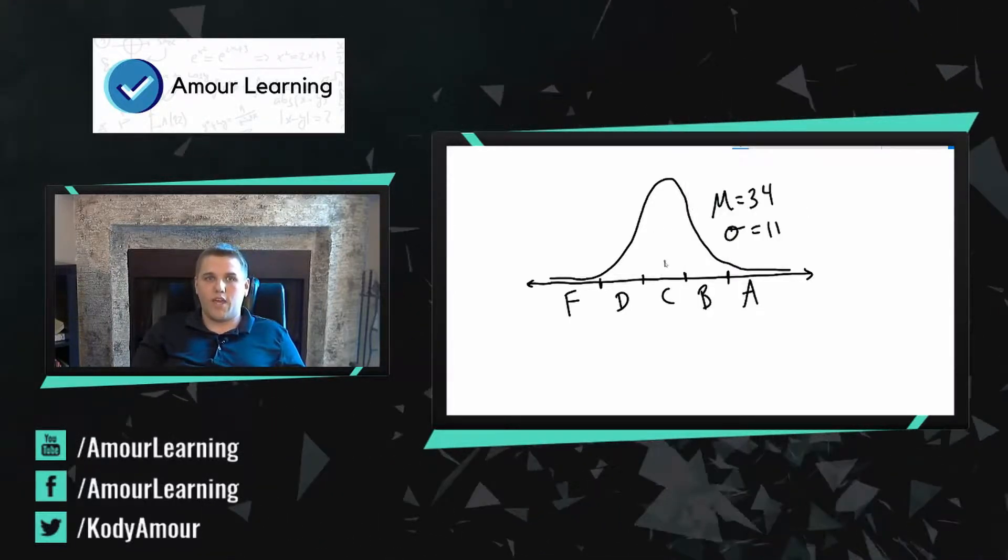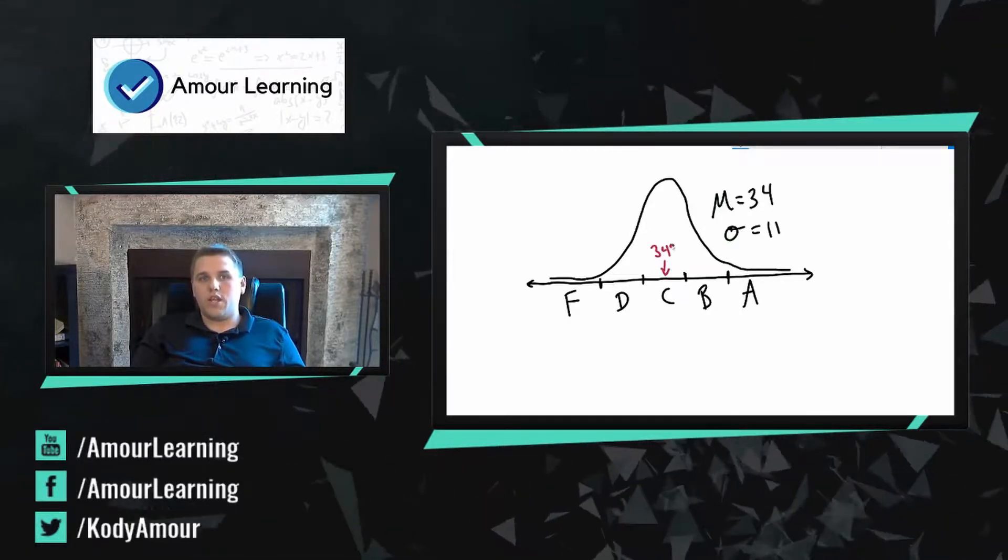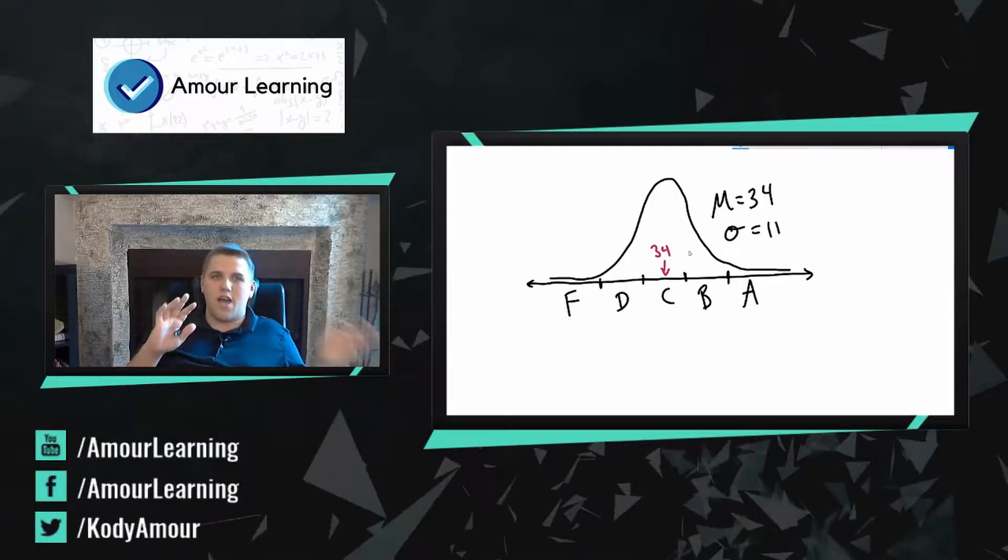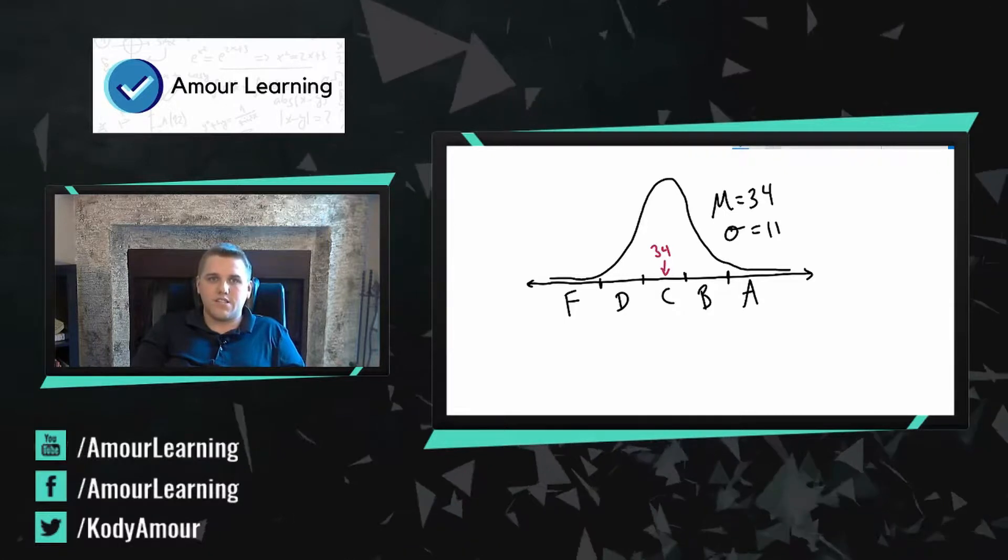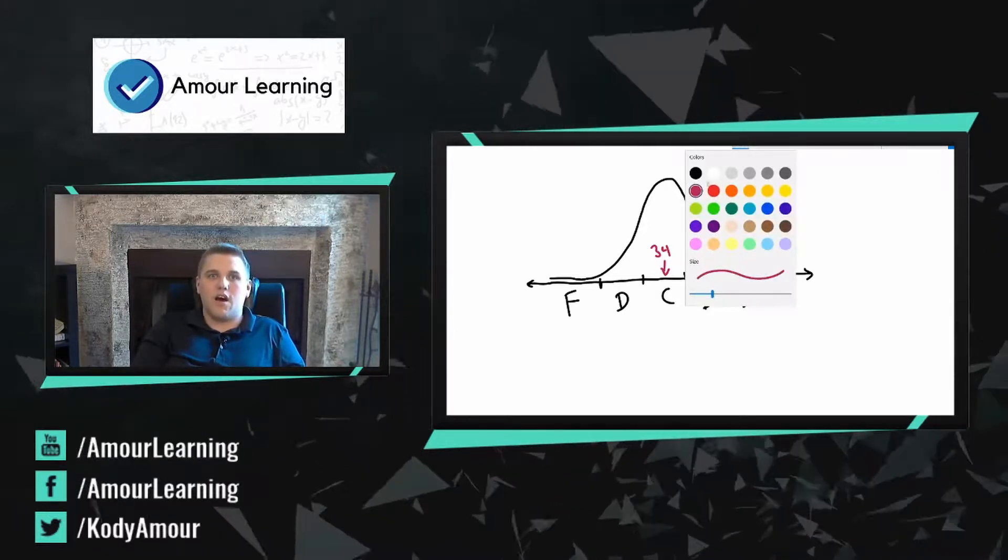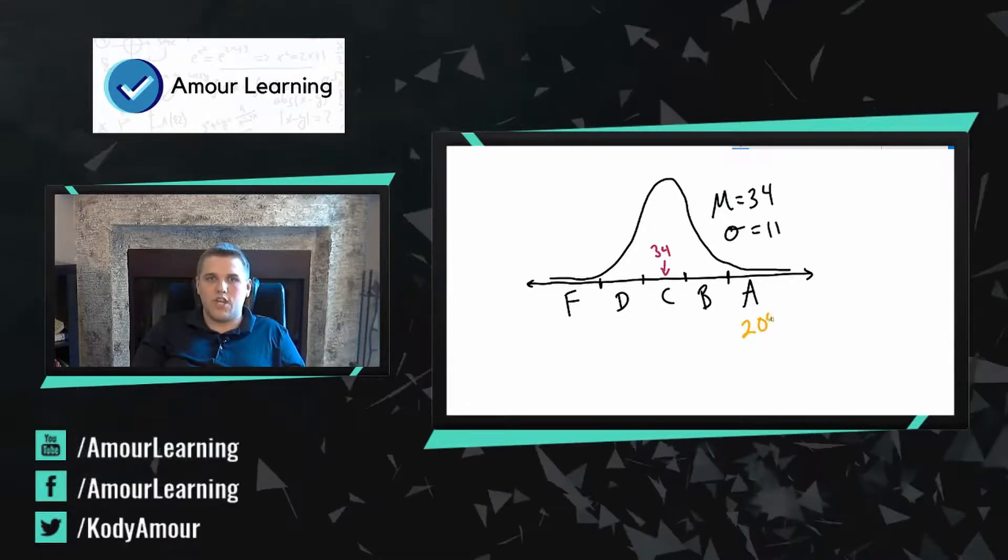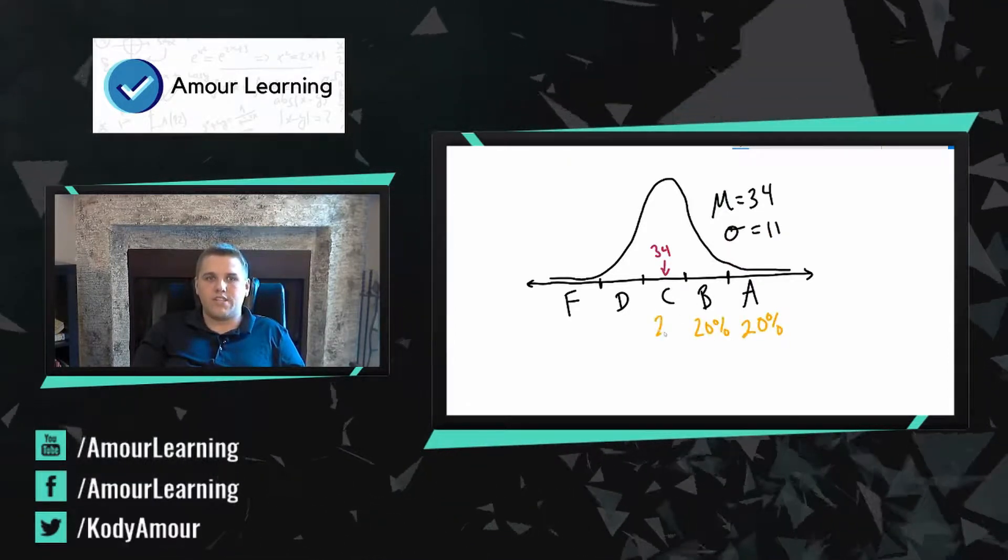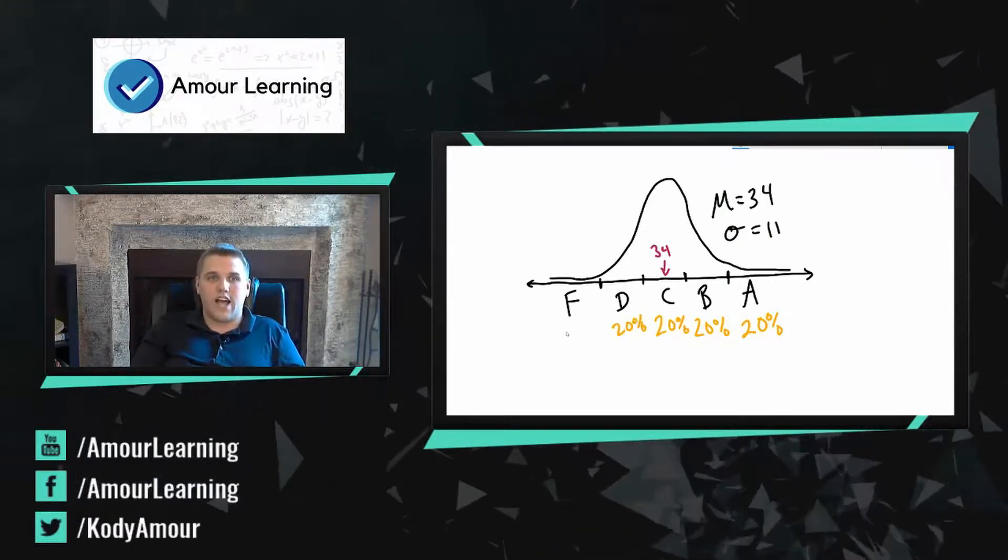So that would mean a couple different things. First off, that would mean this middle right here is 34%. And you would technically label that as a C most of the time. But you actually get to define what your regions are. In this instance, I'm actually giving 20% to each category. That's why all of these segments, these sections, are exactly the same size.